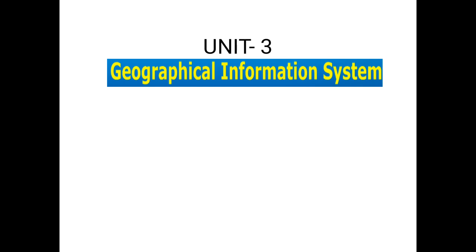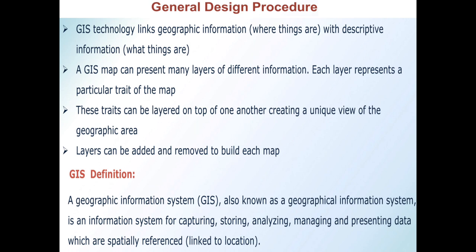Today we are going to discuss our second lecture in Remote Sensing and GIS, that is the Geographical Information System. Basically, a Geographic Information System, GIS, is an information system for capturing, storing, analyzing, managing, and presenting data which are spatially referenced, meaning it is linked to location. And this GIS technology links geographic information with descriptive information.